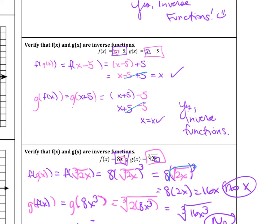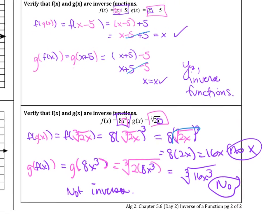The first one: f(x) and g(x) are inverse functions. Plugging in: f(g(x)) — g(x) is x−5, plugged into f gives (x−5)+5, and −5+5=0, leaving just x. Then g(f(x)): f(x) is x+5, plug into g to get (x+5)−5, which simplifies to x = x. So yes, those are inverses.